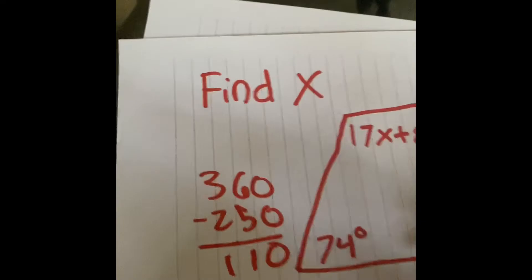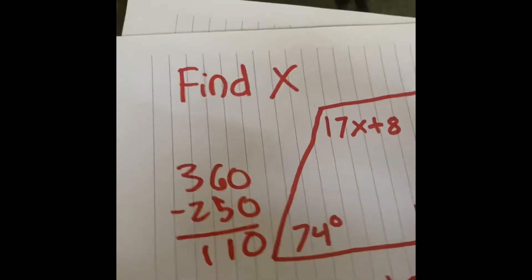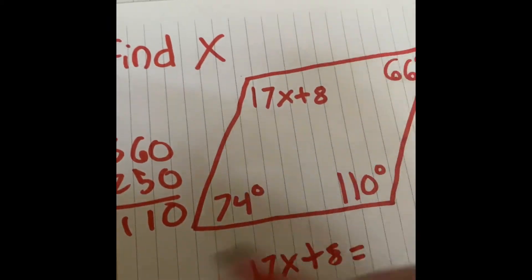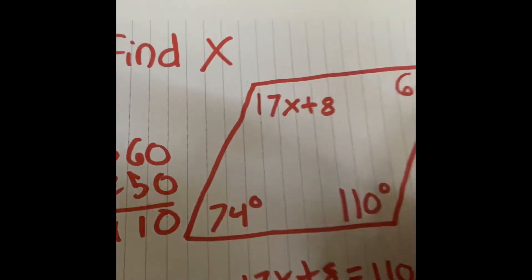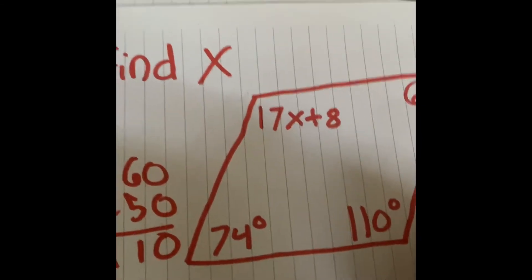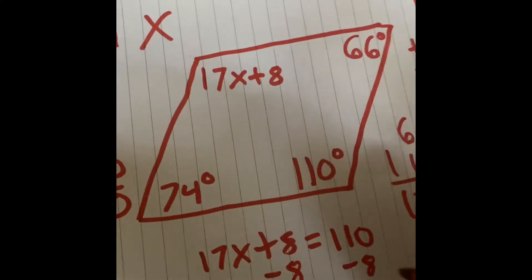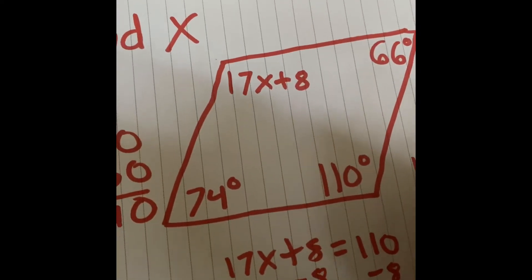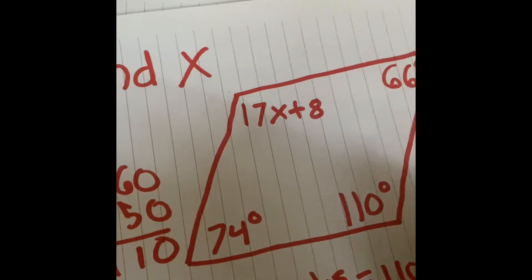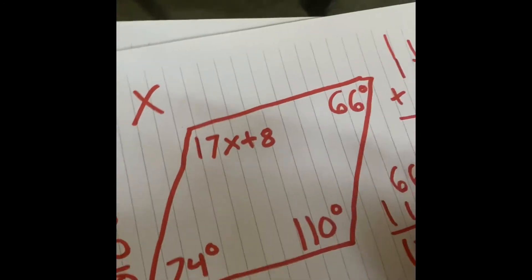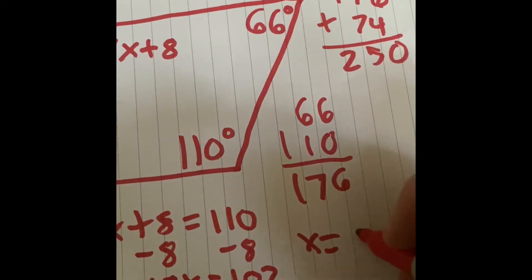So I know 17x plus 8 needs to equal 110. Now I'm going to solve this just like I would any equation where I need to find x. So I'm going to subtract 8. I'm given 17x equals 102. I need to divide by 17, divide by 17, x equals, when I do 102 divided by 17, I get 85.